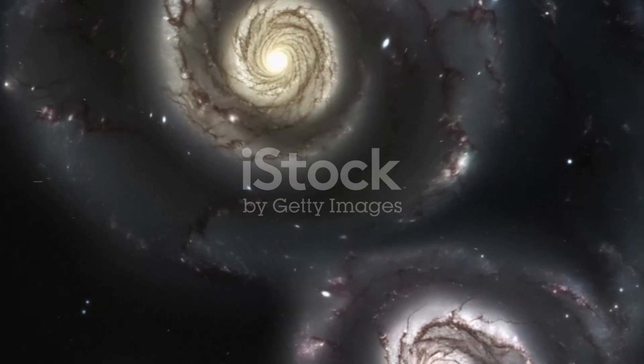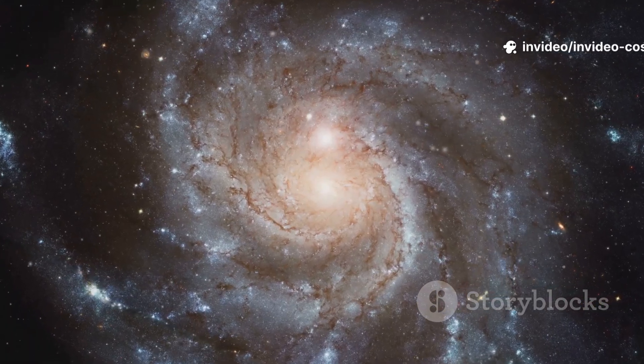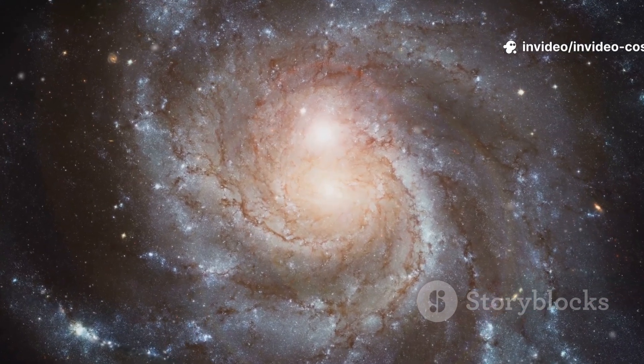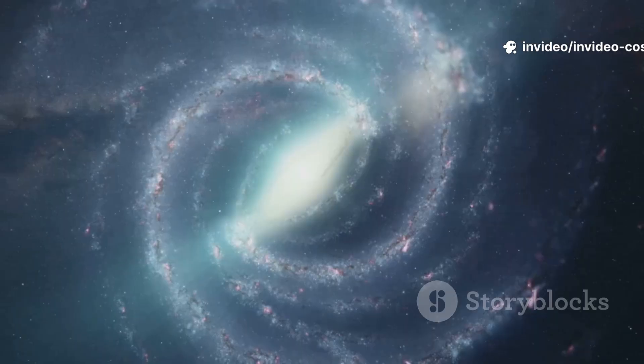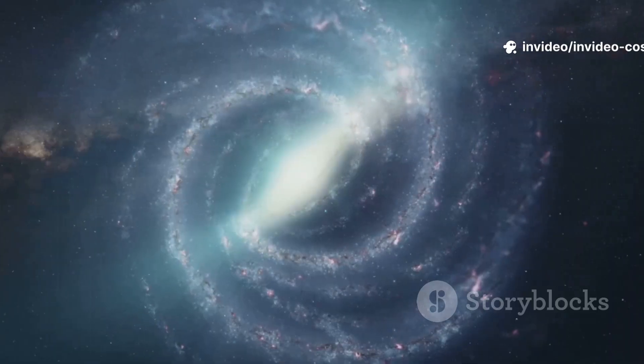But Webb found massive, well-ordered galaxies with spiral arms and central bars far earlier than expected. It's like finding a baby with adult teeth speaking in full sentences. These universe breakers defy our models.